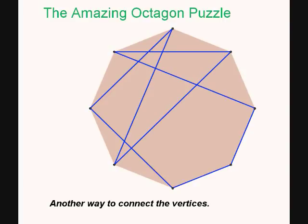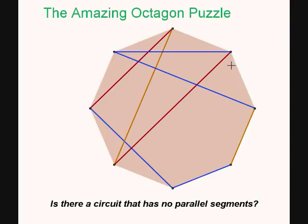Now, the question is, can we draw a circuit going through all the vertices that has no parallel line segments? And we see that our previous example failed, because we have these orange segments being parallel, and these sort of gold segments are parallel. Well, it turns out that it is impossible. No matter how you draw a circuit through all the vertices of the octagon, there's going to be two segments that are parallel. And I'm going to show you the proof of this.